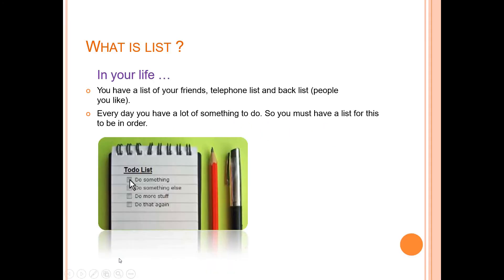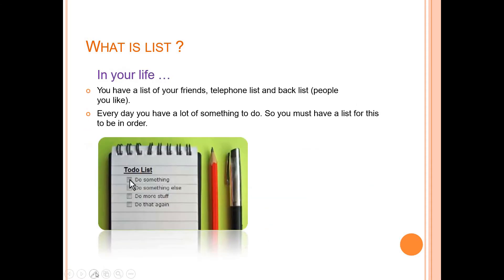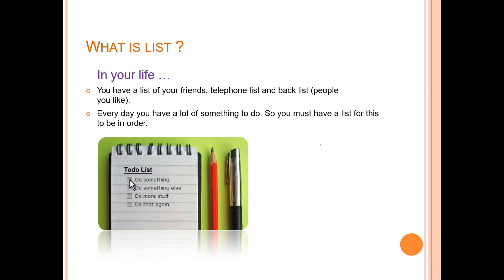First of all, why we use the list concept in your real life scenario. If you have a list of friends, if you have that list down the telephone numbers and which people you like, then list out those scenarios. Then we would use the list concept. For example, what are the friends you like mostly - 1, 2, 3, like that.